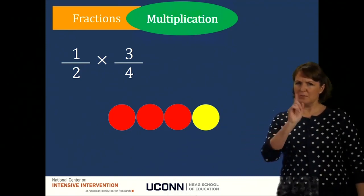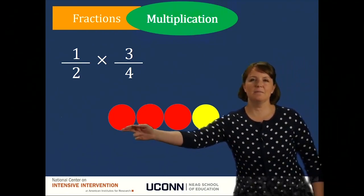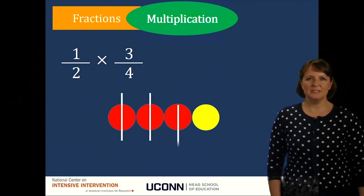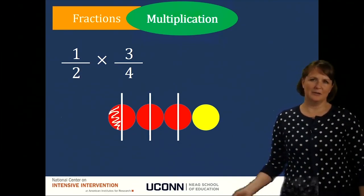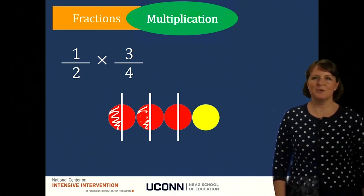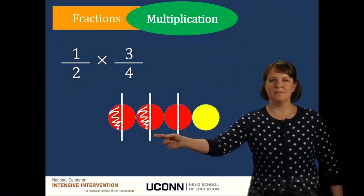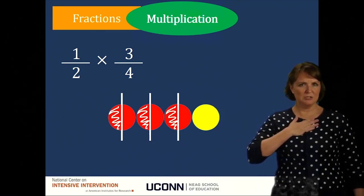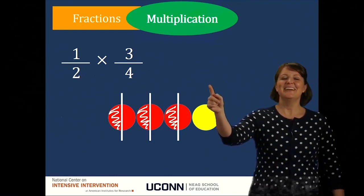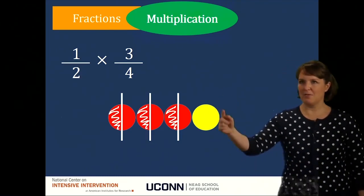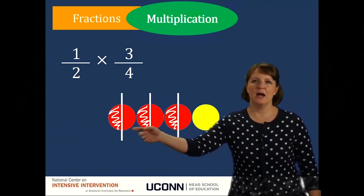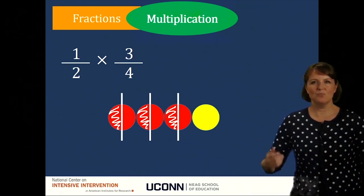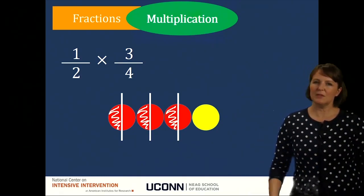Now let's look at this problem one more time using the 2-color counters. 1 half of 3 fourths. Here I have my 3 fourths out, and I'm going to take 1 half of each of those. So I'm going to break each into 1 half. There's 1 half of this 1-fourth piece, 1 half of this 1-fourth piece, and 1 half of this 1-fourth piece. This would also be broken into a piece. So now we're in eighths, and I would have 1, 2, 3 eighths — that's 1 half of 3 fourths.